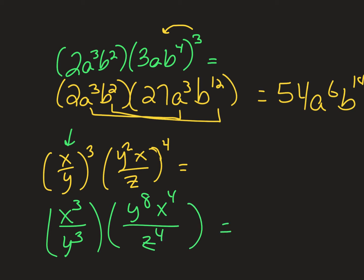So on my numerator, I have x cubed, x to the fourth. That's x to the seventh. I have a y to the eighth. Then my denominator, I have a y cubed and a z to the fourth. Now, I would be finished, except I see a y in my numerator and denominator. Which means, remember, a fraction bar means divide.